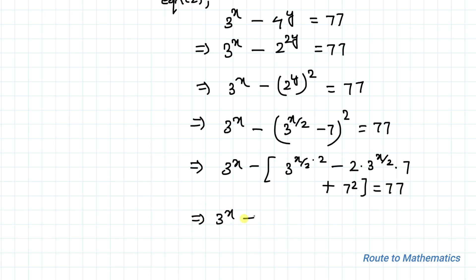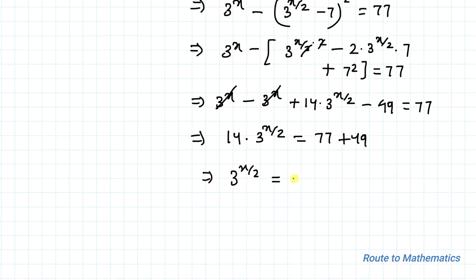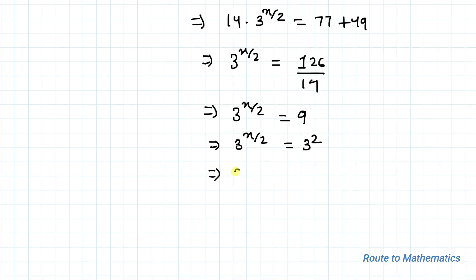The 3^x terms cancel, leaving 14 × 3^(x/2) = 77 + 49 = 126. So 3^(x/2) = 126 ÷ 14 = 9 = 3², which gives x/2 = 2 and x = 4.